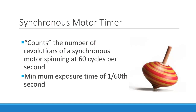The synchronous motor timer counts the number of revolutions of a synchronous motor spinning at 60 cycles per second. Once the timer counts the correct number of revolutions, the manually set exposure is terminated. This type of timer is able to produce a minimum exposure time of 1/60th of a second, as it is limited by the number of revolutions per second.